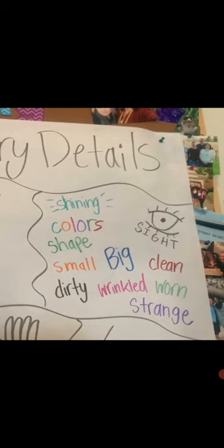Words related to sight — things you see — can be shining. For example, I saw the sun shining. Colors, shape in general: small, big, clean, dirty, wrinkled, worn, strange. Anything you see with your own two eyes.